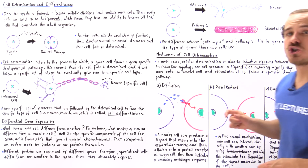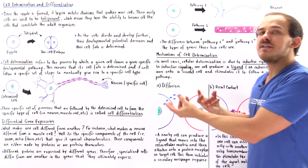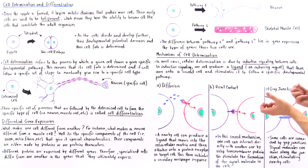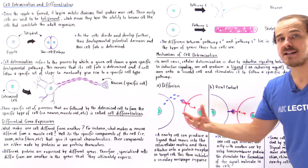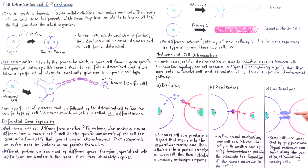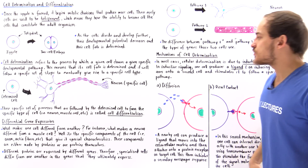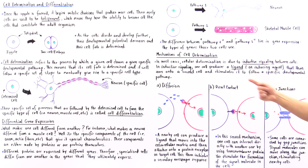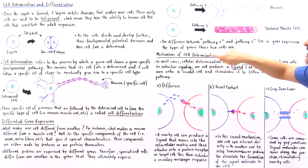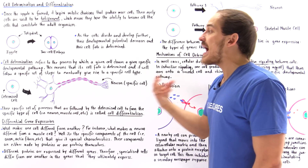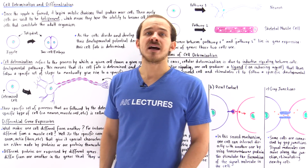Finally, we have gap junctions. Some cells are physically connected to one another via a special type of junction known as a gap junction. In this case, one of the cells produces some type of signal, that signal moves along the gap junction into the second cell, and it influences the nearby cell to determine its pathway. That will eventually lead to cell differentiation and the formation of a specific specialized type of cell. These are the three mechanisms by which inductive signaling takes place, allowing that cell to determine the pathway it will follow to produce a specialized type of cell.